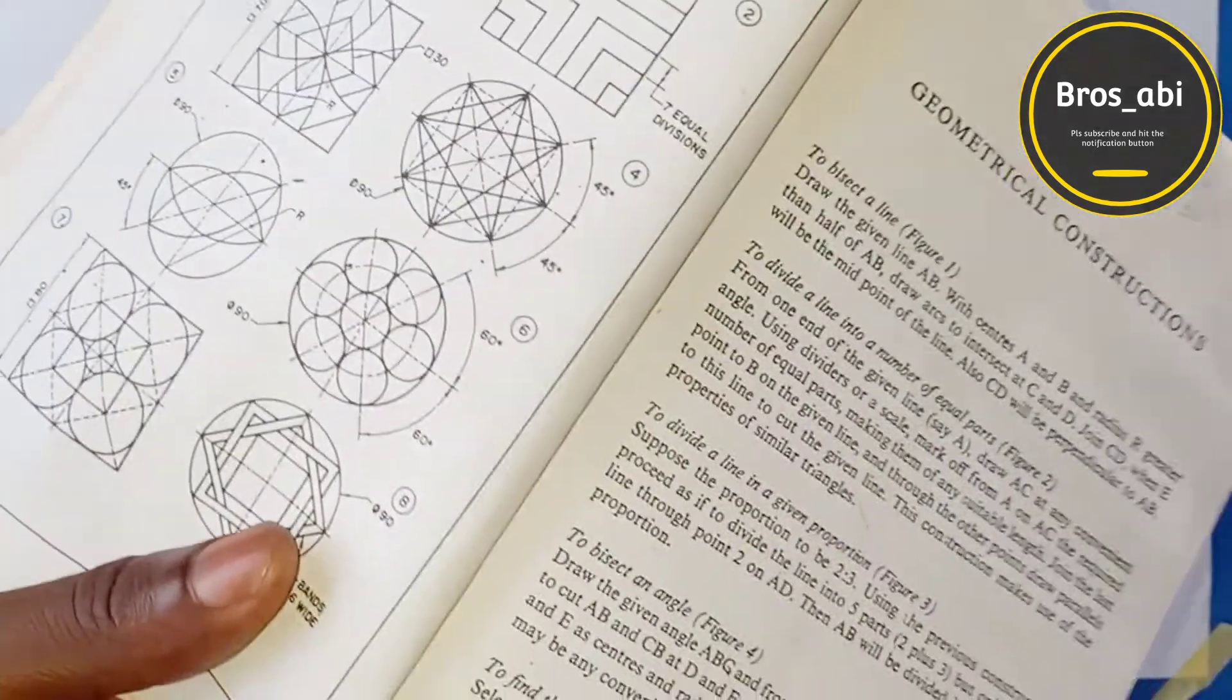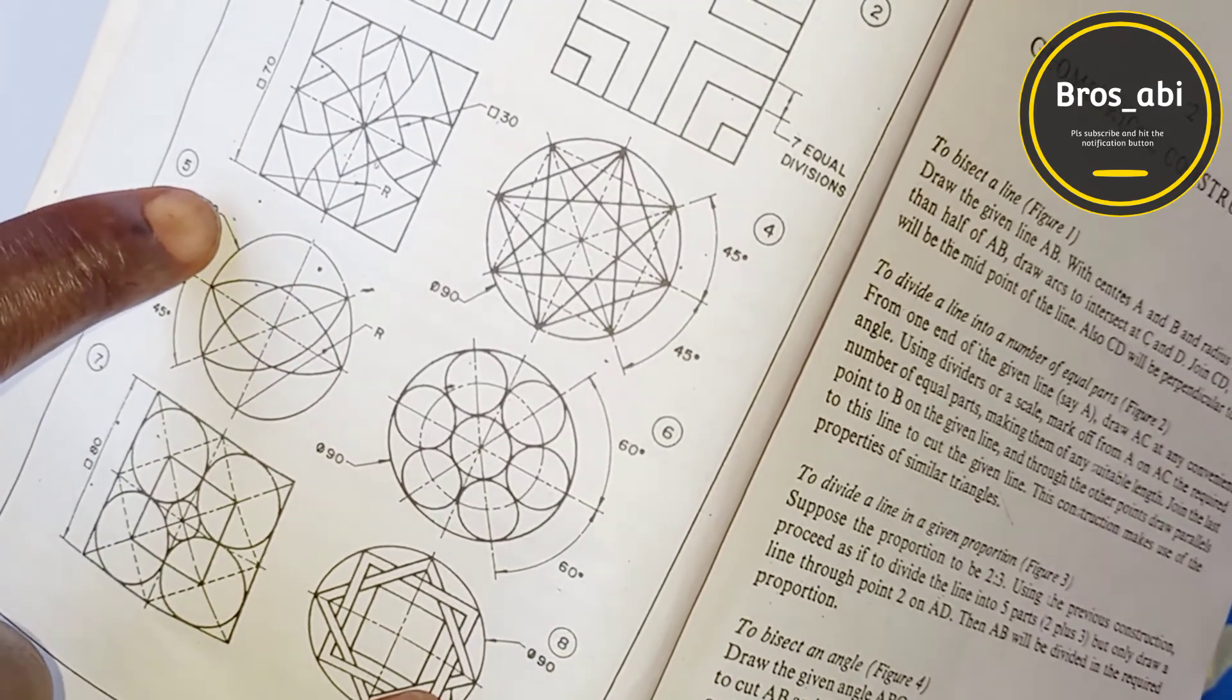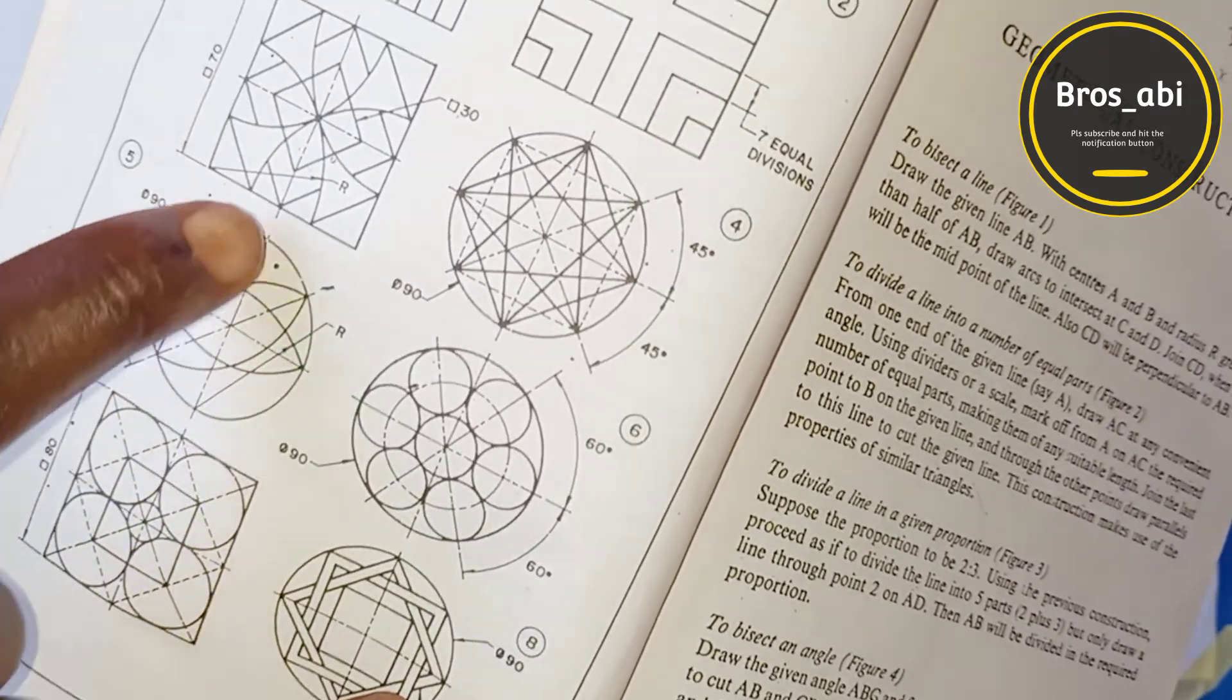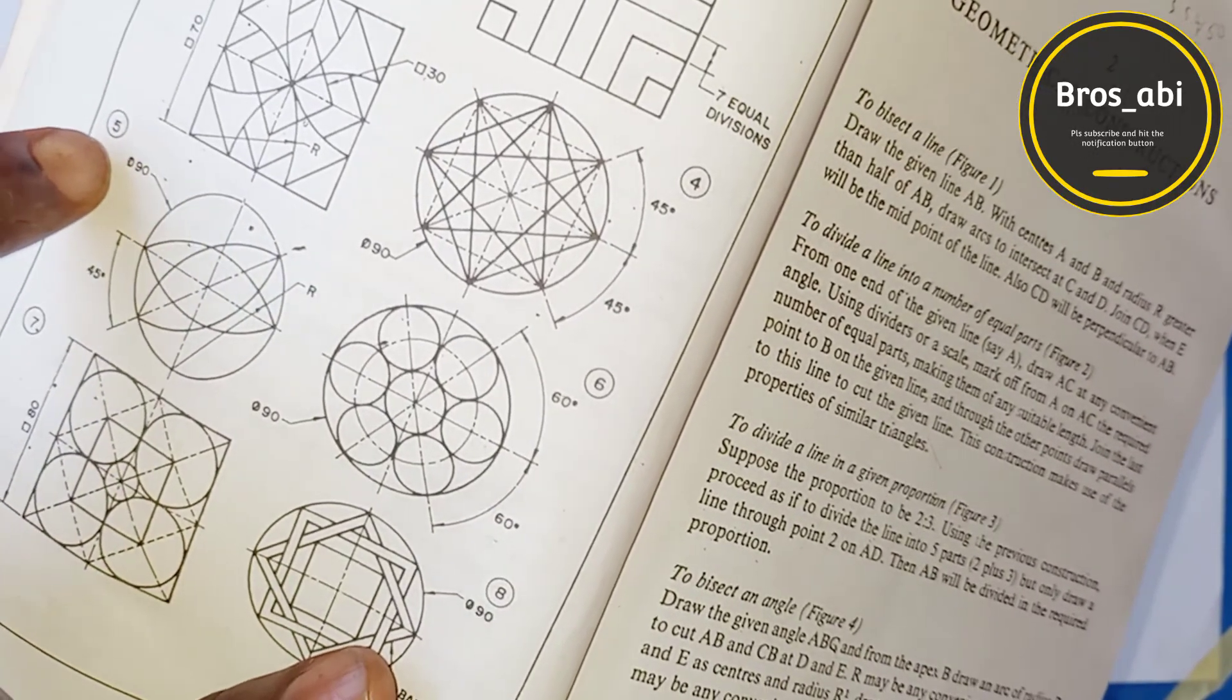Change the question. It is being indicated by this arrow that this circle is 90 diameter. This sign before 90 means diameter.